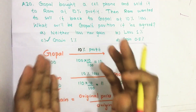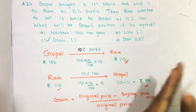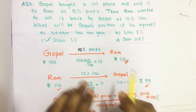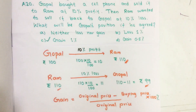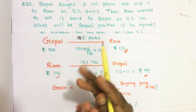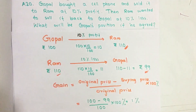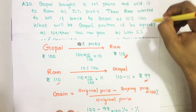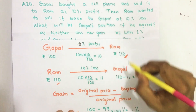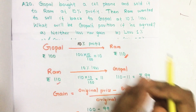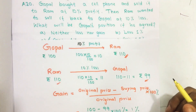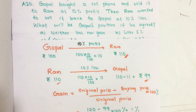Gawbal bought a phone and sold it to Ram at 10% profit. Then Ram wanted to sell it back to Gawbal at 10% loss. What is the position of Gawbal — whether he is gaining some money or losing some money with this deal? That is what we have to find.